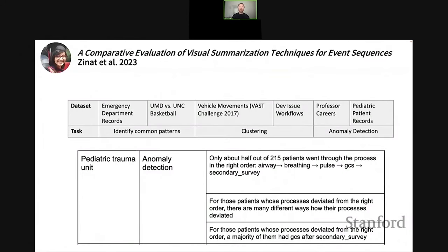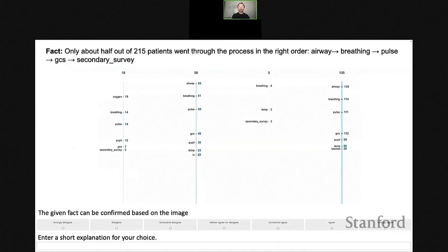To address this problem, my student Zena and I conducted the first comparative evaluation of visualization techniques for event sequence data. We collected six different datasets from very different domains and identified a user task for each. For each dataset we analyzed the data and came up with ground truth — the main insights we discovered. We then conducted a crowdsourcing study where users are presented with an insight (the fact) and shown a visual summary one at a time, rating on a Likert scale how well the visualization represents the given fact, and entering a short explanation.